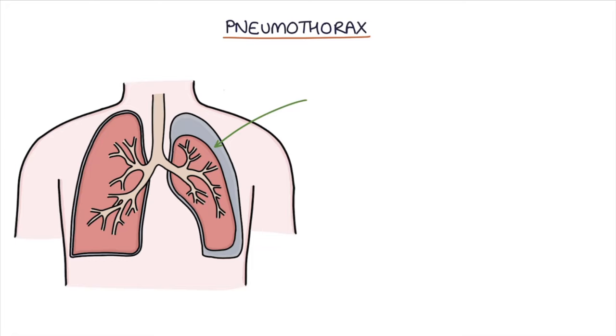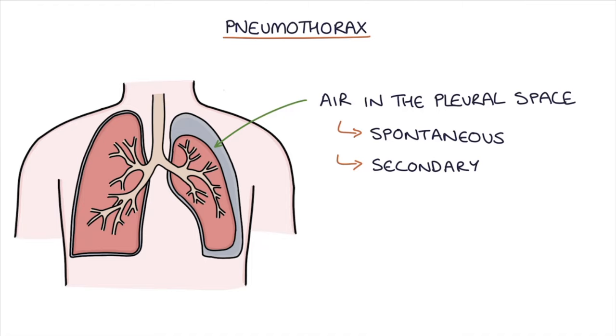A pneumothorax occurs when air gets into the pleural space that separates the lungs from the chest wall. It can occur spontaneously or secondary to other things like trauma, medical interventions, or lung pathology.